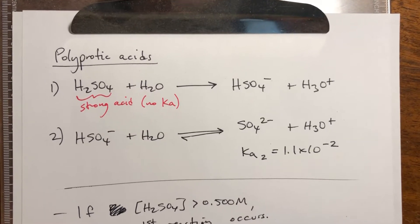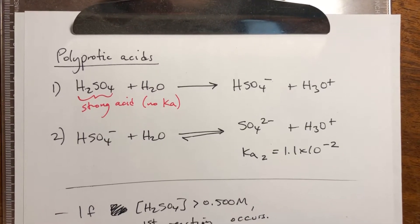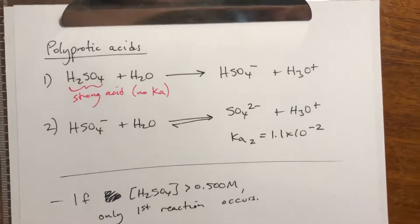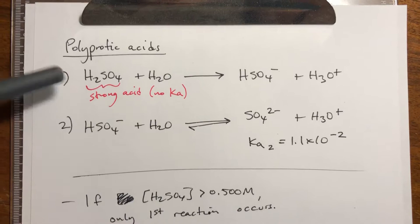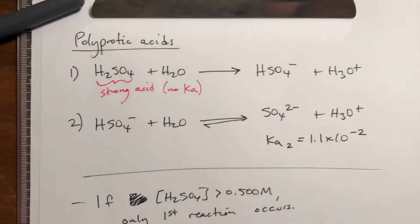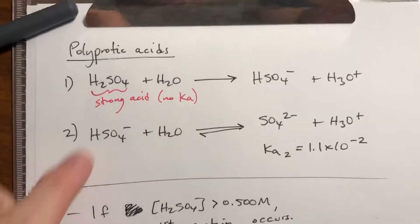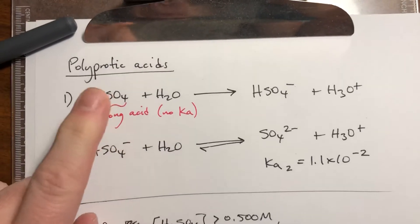Okay, we need to talk about what happens if you have a polyprotic acid, so something that has more than one proton, that also has a strong acid as part of that. Sulfuric acid is about the only example of that, really, but sulfuric acid is a strong acid for the first proton.